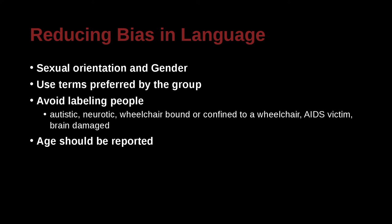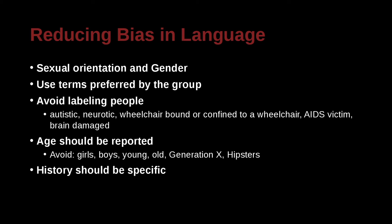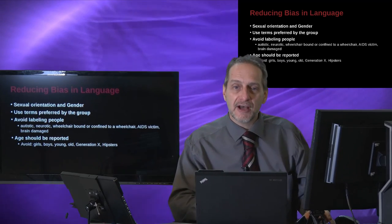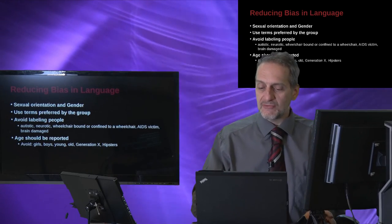When talking about age, be very clear. Don't just say girls, boys, young, old, men, women, Generation X, hipsters. Rather, be specific. Instead of 'girl,' say 'a female of 12 years old.' Instead of 'old,' say 'a male of 65 years old.' Instead of 'Generation Z,' say something like 'respondents born after 2005 and before 2015.' Be very clear.